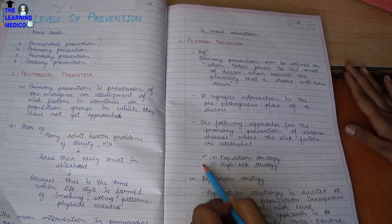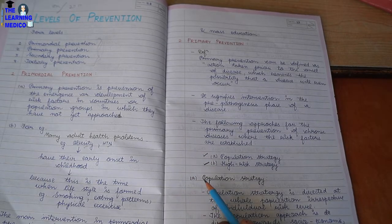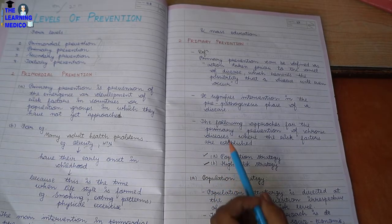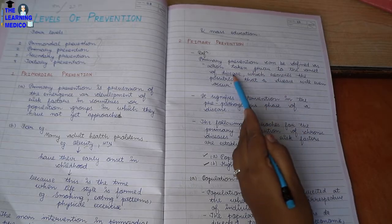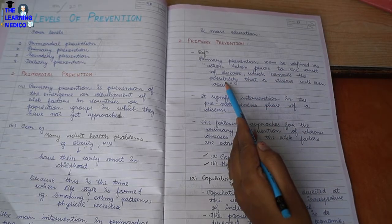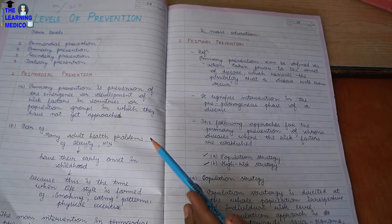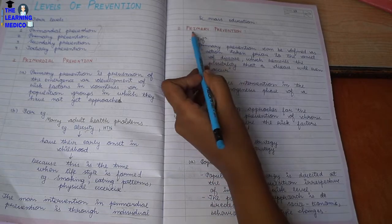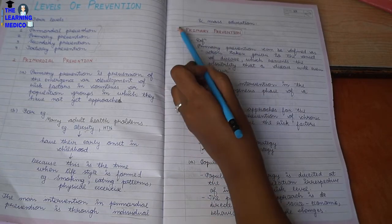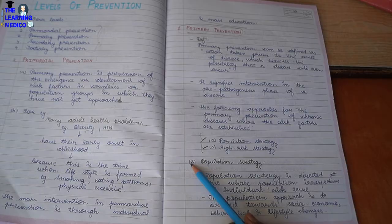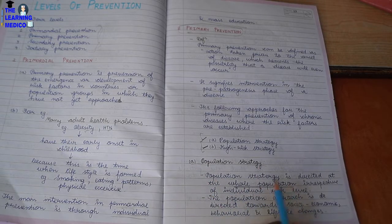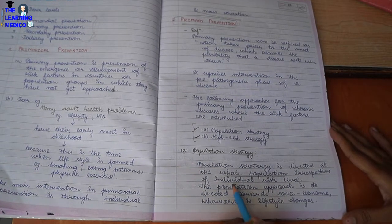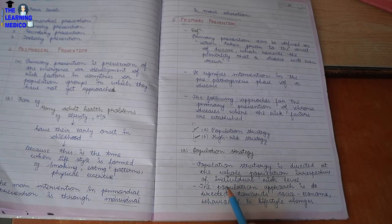The approach for primary prevention of coronary disease, where risk factors are established, includes two strategies: Population Strategy and High Risk Strategy. In Population Strategy, we target the whole population and address social, economic, behaviour, and lifestyle changes.